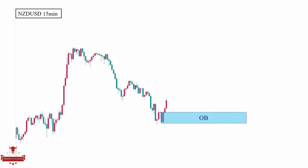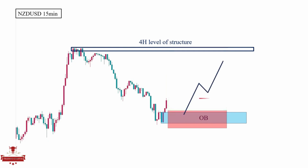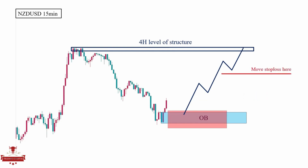This is how we execute the trade. We place our order a spread size above the order block, with the stop loss being a couple of pips below the lowest point of the zone. For the first TP, you could close half of your position when the price reaches your 1:2 target. This way, even if the price gets back and hits your stop loss, you are at break even. For the second TP, you can target the next level of structure in front of the market in the higher time frame. Or you can also trail your profit — meaning that every time the market makes a higher low, you reposition your stop loss a couple of pips below the lowest candle.